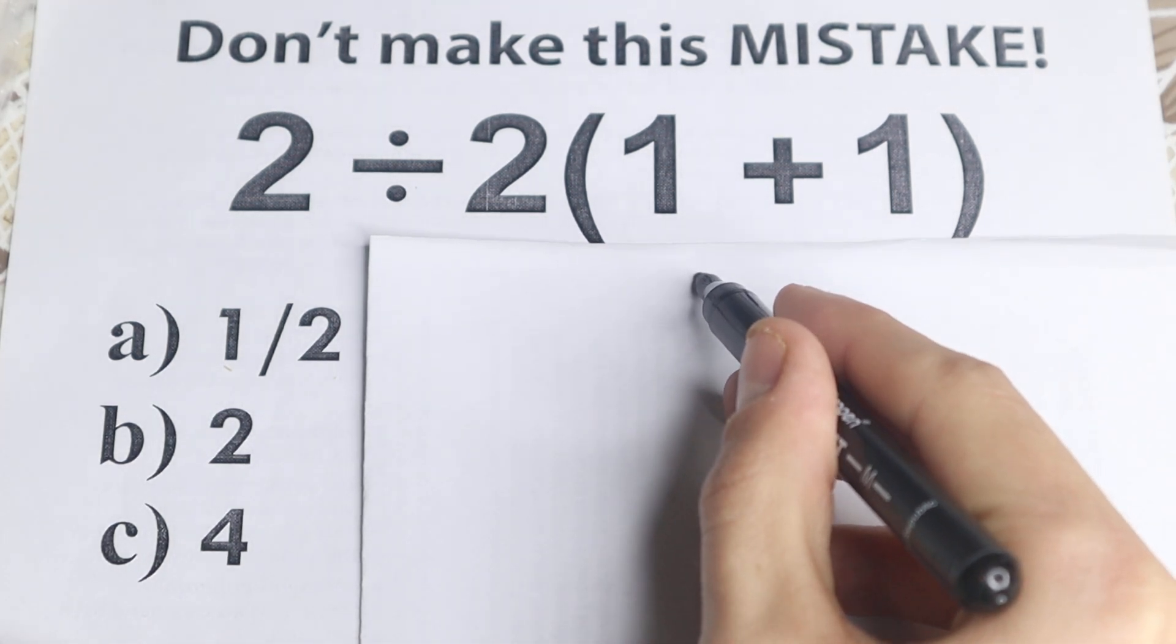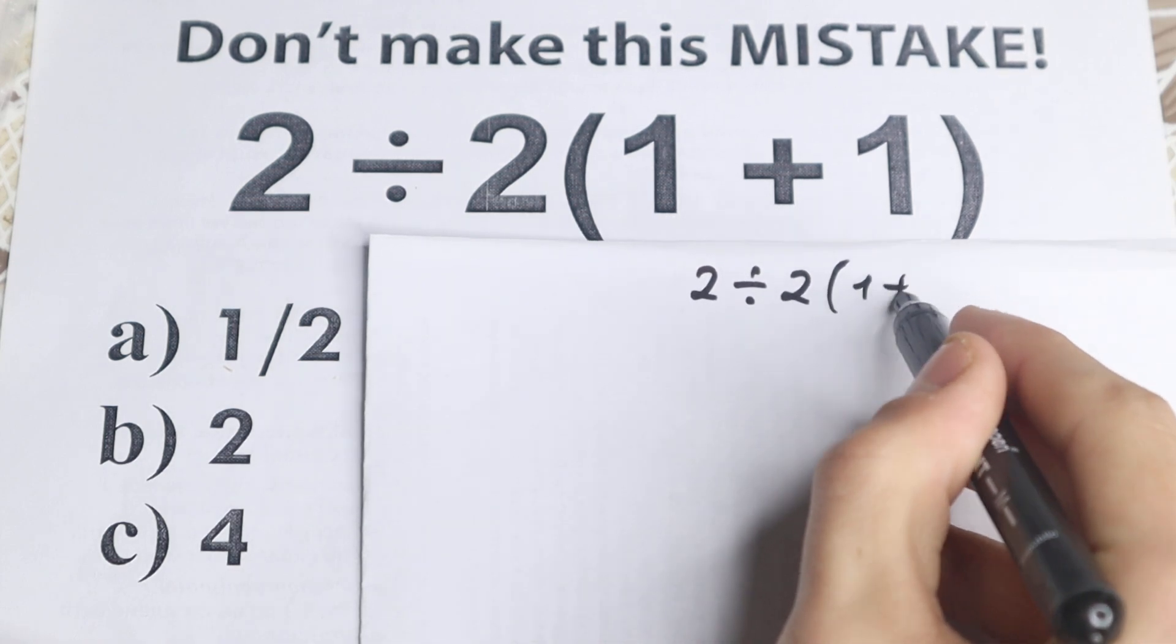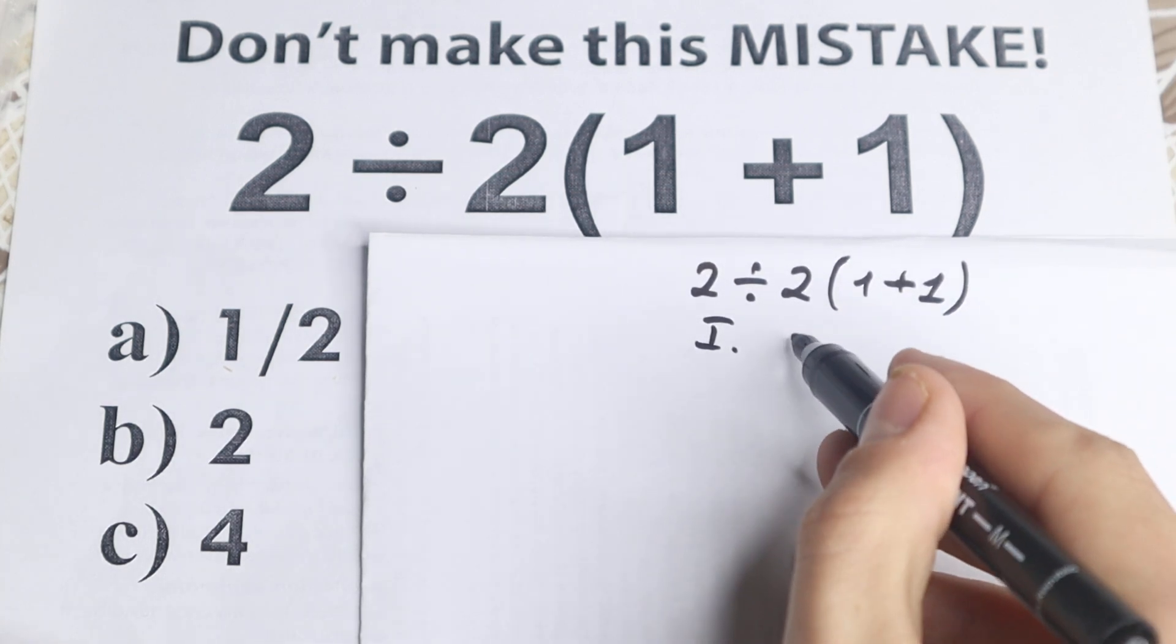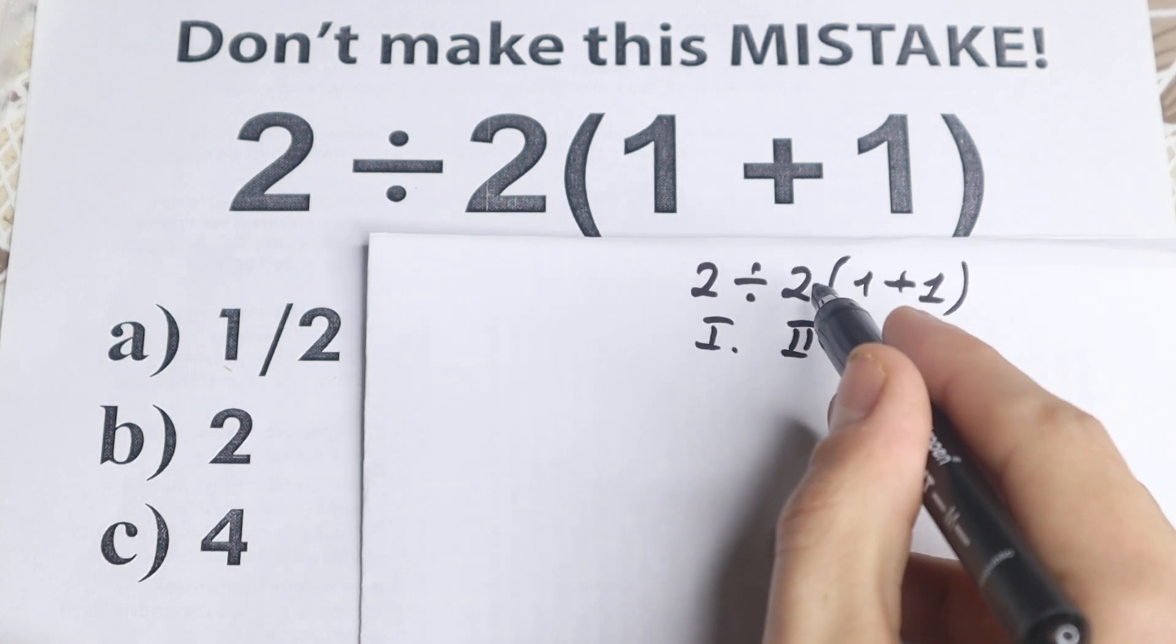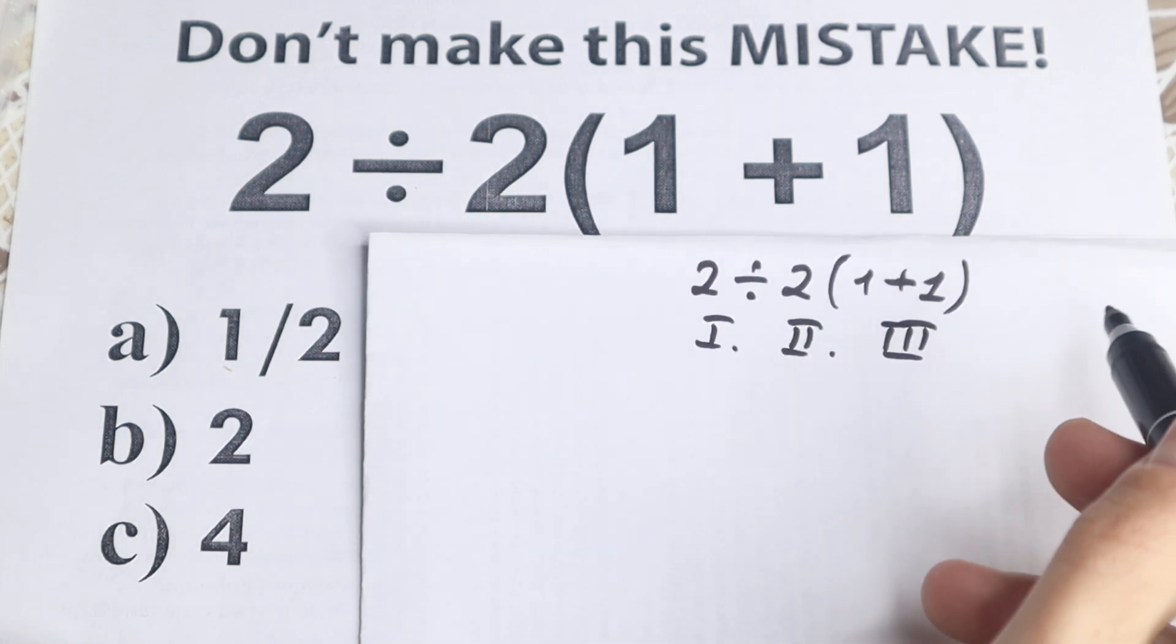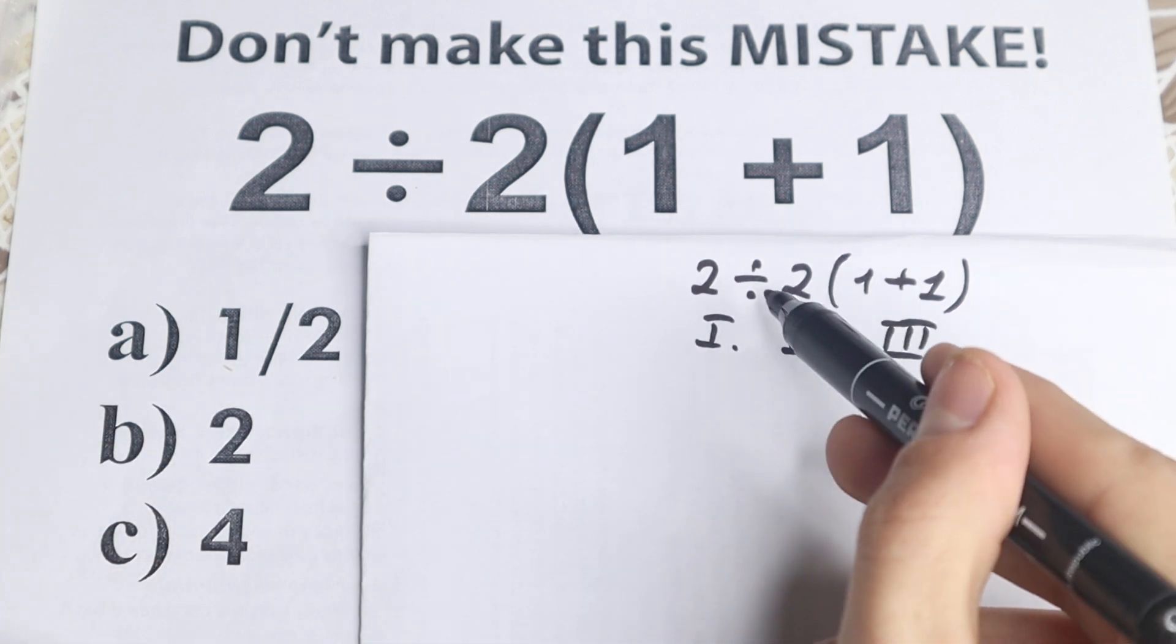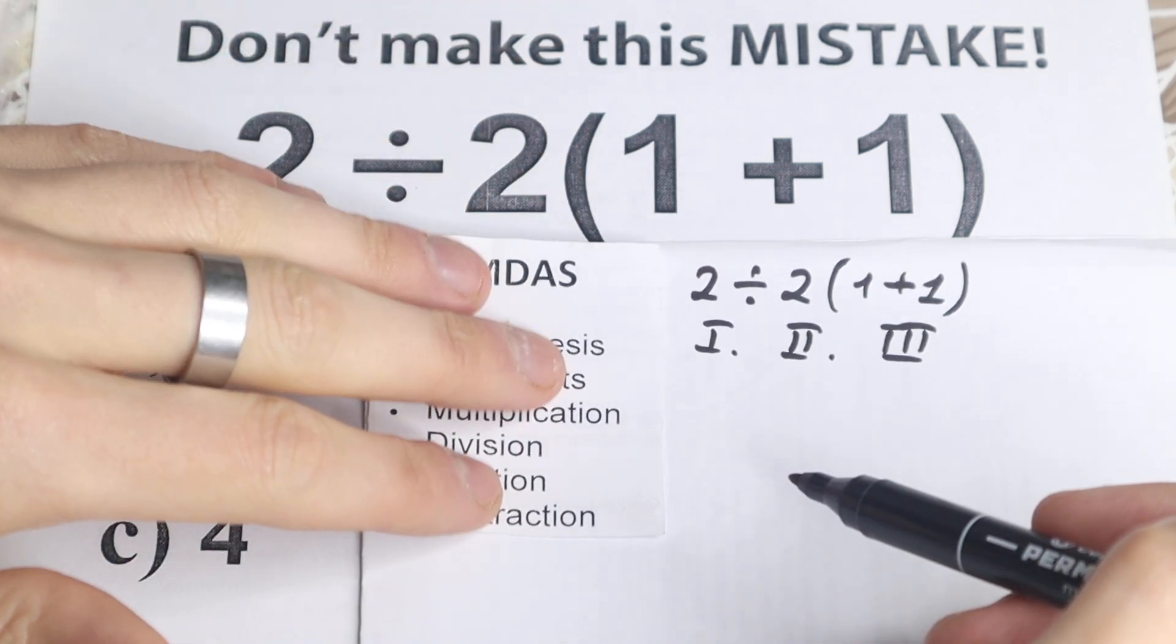So I just want to rewrite this problem. So 2 divided by 2 and in parentheses is 1 plus 1. The first part of students start with division, the second part of students start with parentheses, the third part of students start from this multiplication and it's really interesting. So right now we need to understand what is the correct order of operation, because obviously whatever order we select is going to create a different answer. So we need to understand what is the correct order.